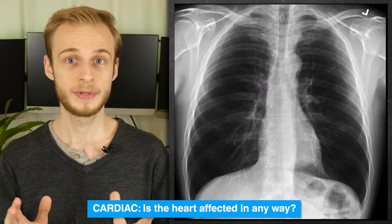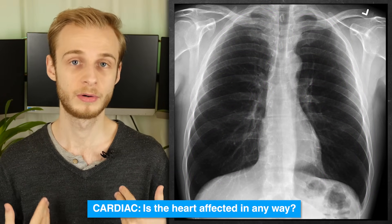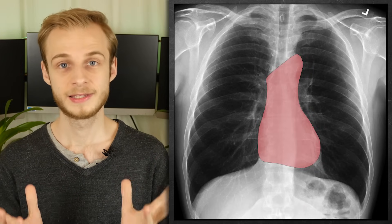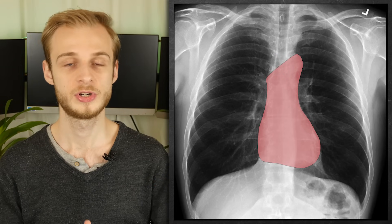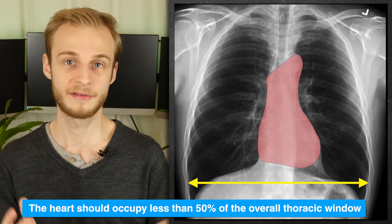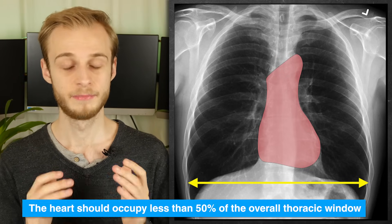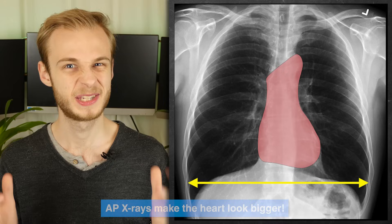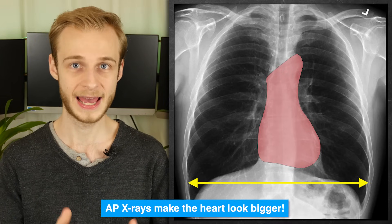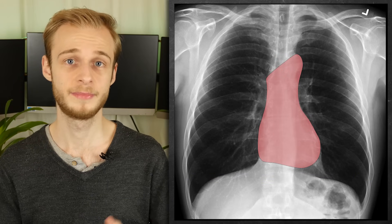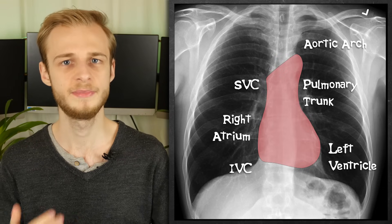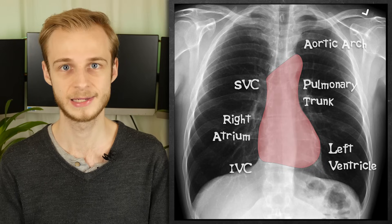C is for cardiac. A lot of people think chest x-rays are only to do with breathing problems, but the heart is one of the most important things to assess. The first and easiest thing to check is its size, which should ideally be less than 50% of the entire thoracic window. If it's more than that, we would clinically have cardiomegaly. It's important to remember that AP x-rays exaggerate the size of the heart, so you can only make cardiomegaly decisions based on a PA x-ray. We also need to check the right atrium and the left ventricle, which make up most of the visible heart border.